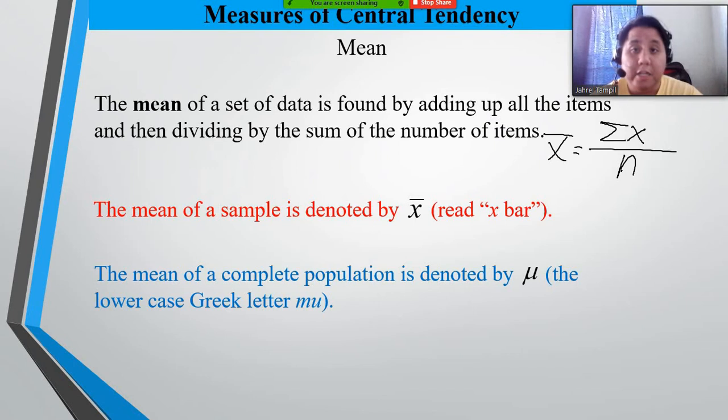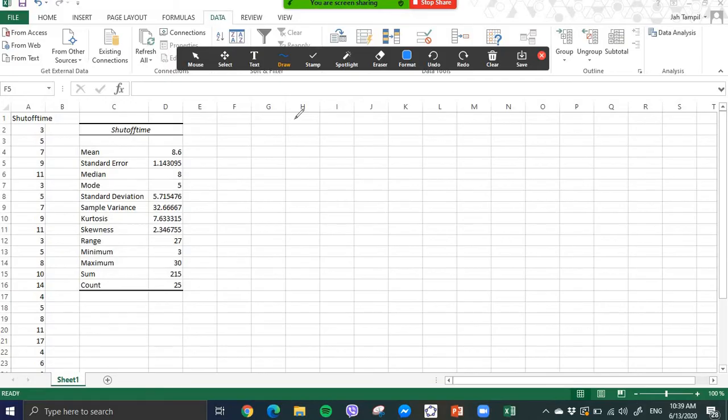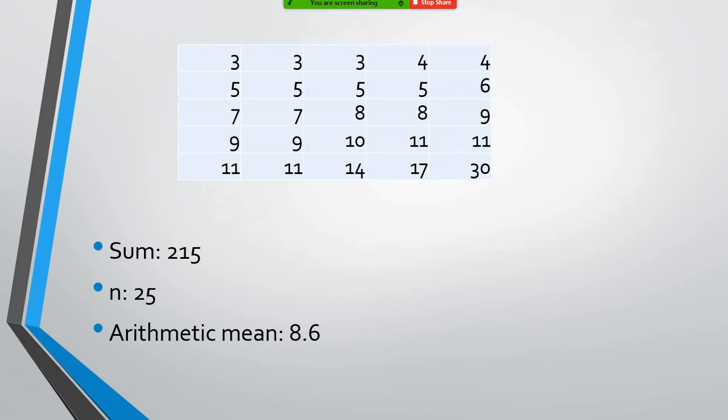Going back to our Excel file of the different descriptors that we had a while ago, we can see that the mean shot of time is 8.6. So we will get this data 8.6—that would mean the mean of the data set that you're seeing right now is 8.6.